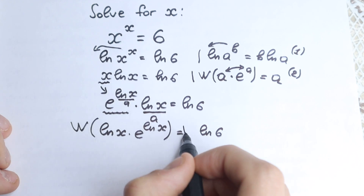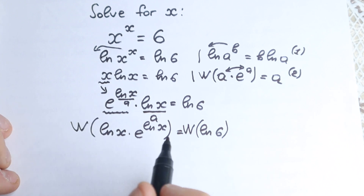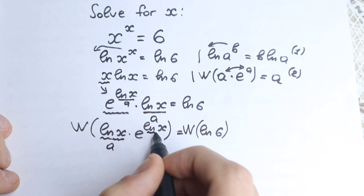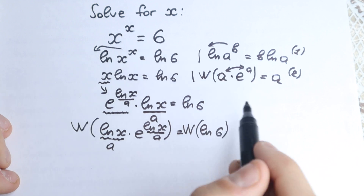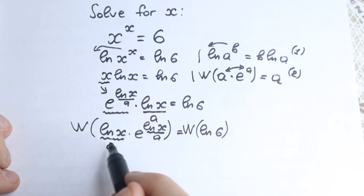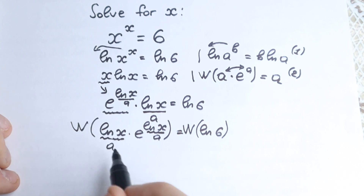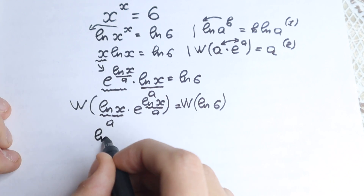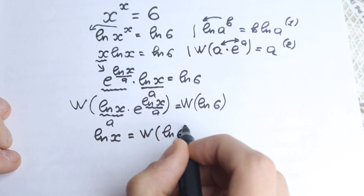We apply the Lambert W function on the left and on the right hand side. Right now, the really great moment: we have natural log x here — this looks like our a, this is natural log x. Going back to my explanation about the Lambert W function: Lambert W function from this expression gives us only our a. In our case a equals natural log x. So let's write: natural log x equal to Lambert W function of natural log 6.